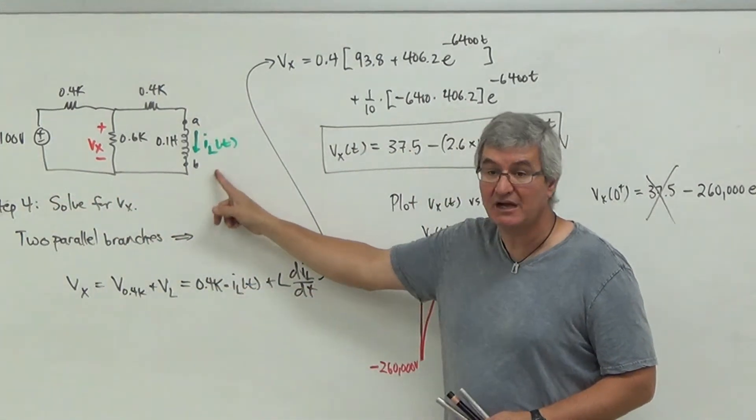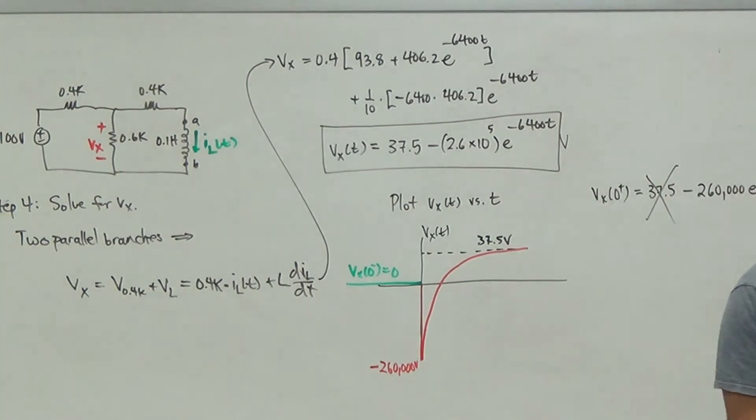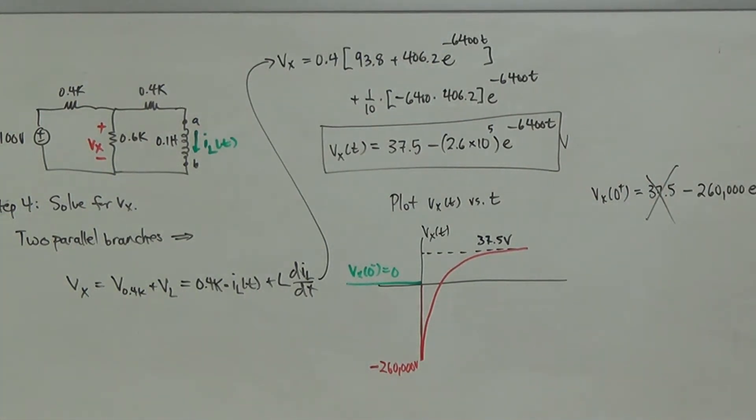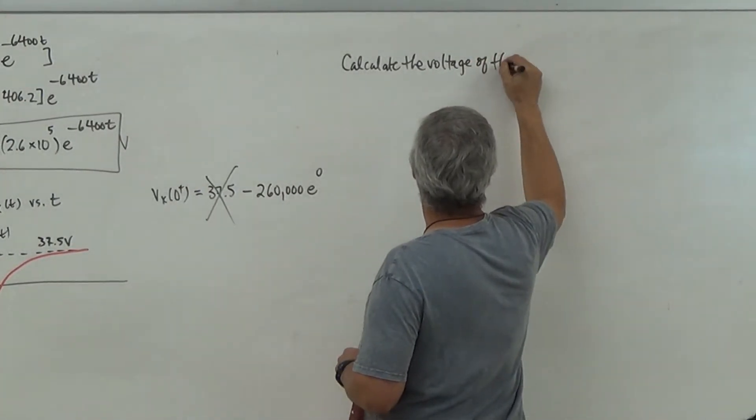Where do you think that voltage drop is coming from? It has to be coming from the inductor. That guy can't do it. So it's got to be the inductor. So how do we know about the inductor? I've got to go back and I've got to calculate what is the voltage of the inductor.